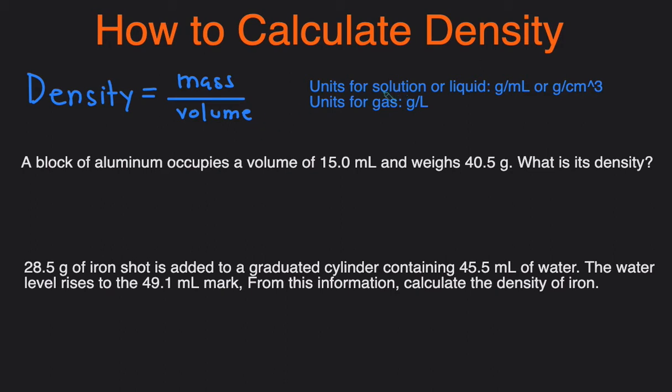So the units for density for a solution or liquid typically is grams per milliliter or grams per centimeters cubed. Milliliter and centimeters cubed are interchangeable, and typically the unit for density of gases is grams per liter.